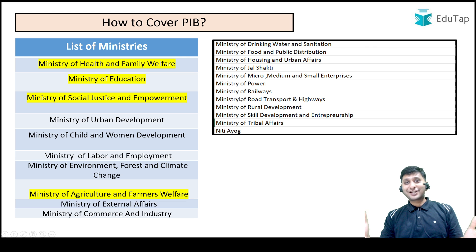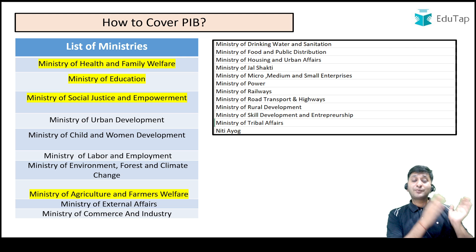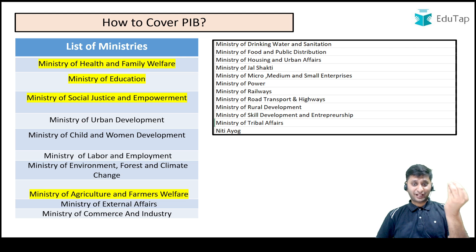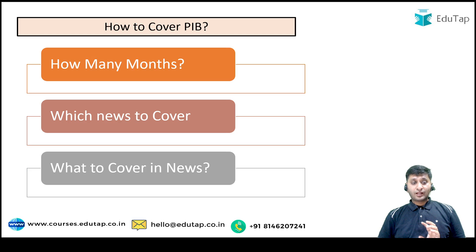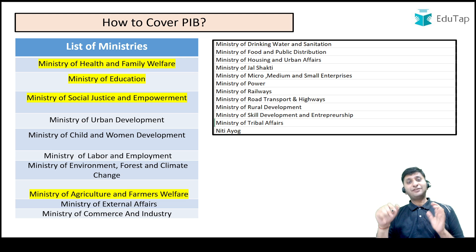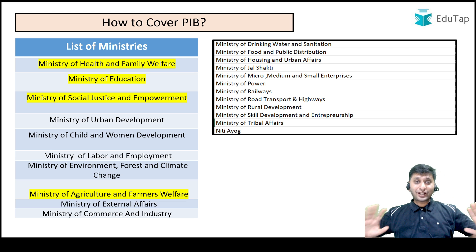Why are these important even when not directly in the syllabus? Drinking water, housing, power, railways, transport, rural development — somehow they are all related to human development, which is part of the syllabus. Skill development and entrepreneurship also fall under this. So these ministries must be covered without any doubt. For Phase 2, cover these specific ministries. For Phase 1, cover all ministries because they can ask from anywhere.